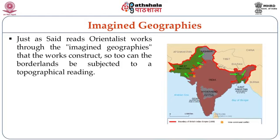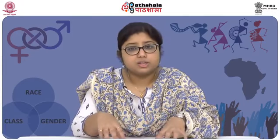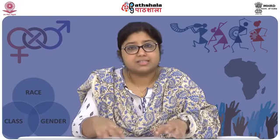Just as Said reads Orientalist works through the imagined geographies that the works construct, so too can the borderlands be subjected to a topographical reading. In South Asia, the Radcliffe Line problematizes the whole cultural, political, social, linguistic, and geographical scenario, as India, Pakistan, and Bangladesh were parts of the Indian subcontinent. So how does a country vast enough with so many different provinces suddenly become two or more countries, with its cultural, political, and social factors getting suddenly changed and reshaped?